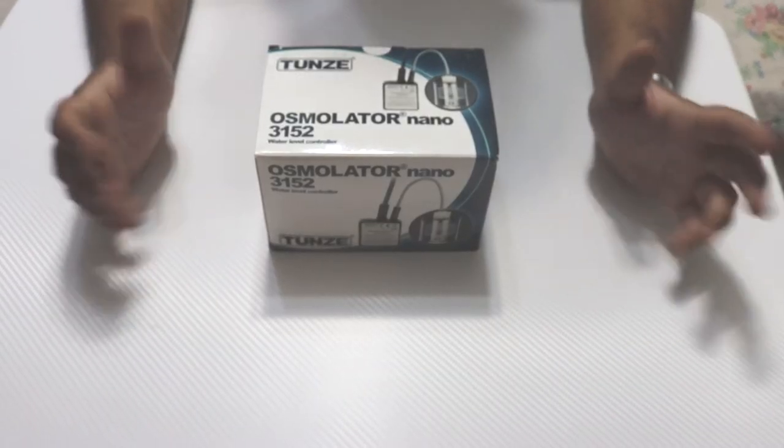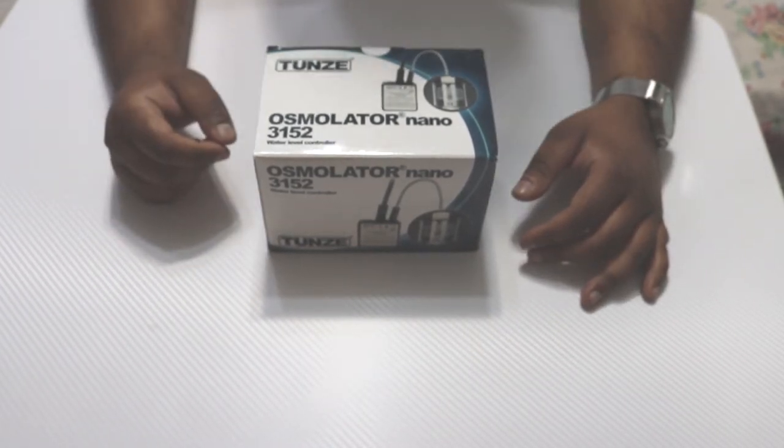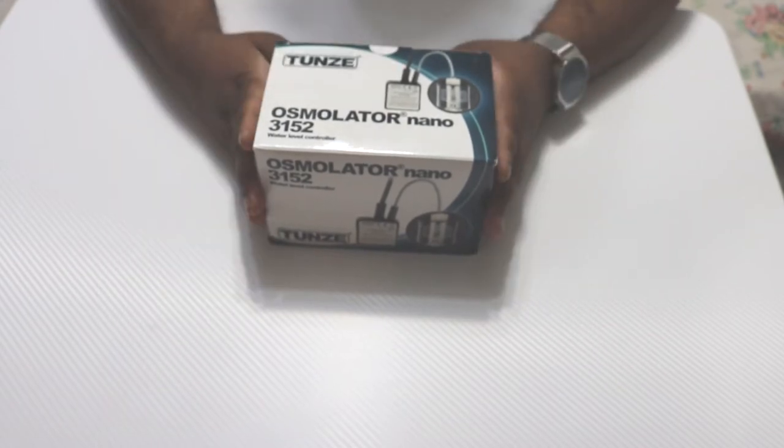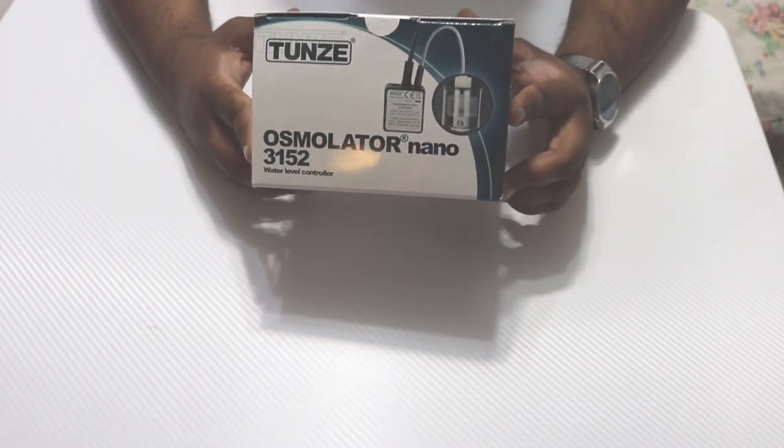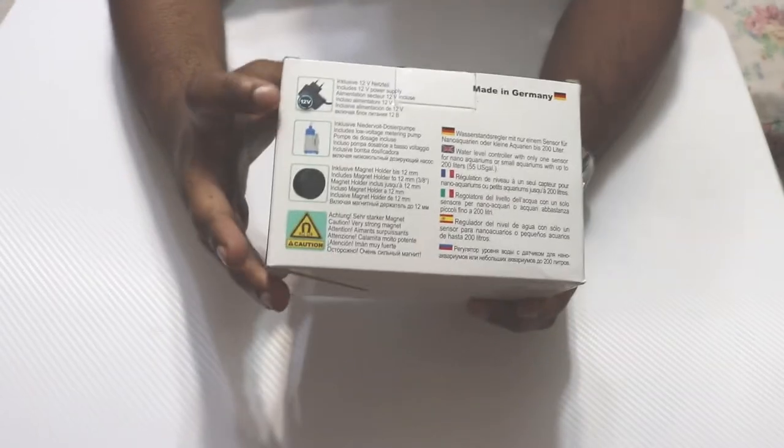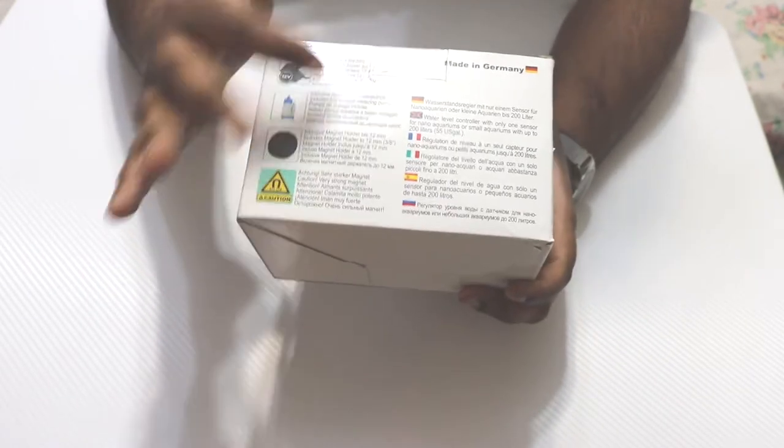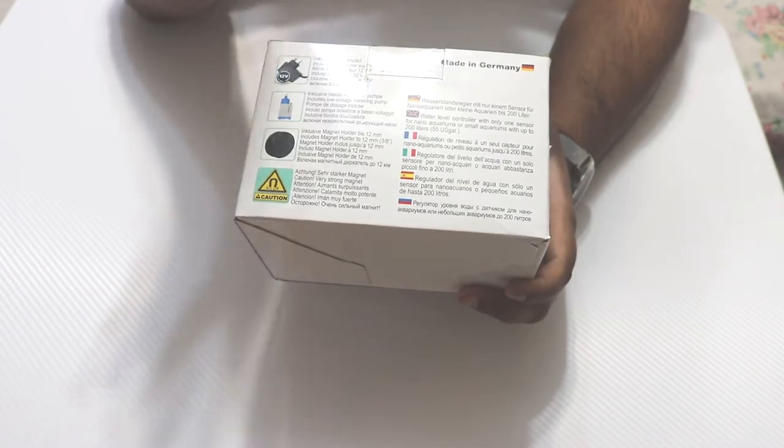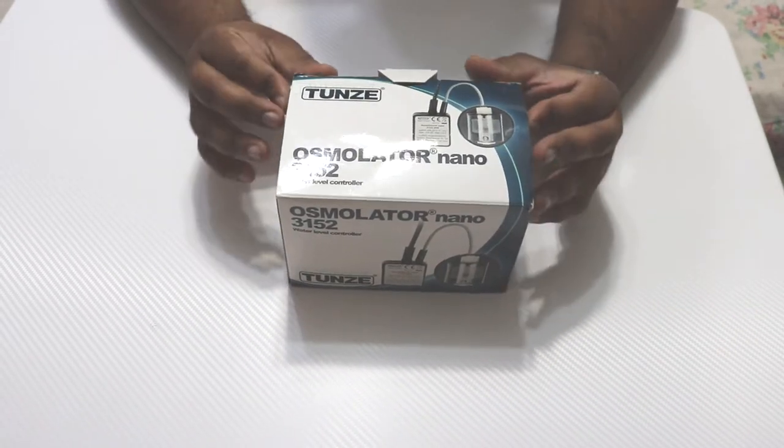So here we are on the bench with the unboxing of the Tunze Osmolator Nano 3152. So let's open it up, see what we get inside. Before we do, I just want to show you guys what's on the box itself. So on the back of the box, it will show you everything that this comes with. As you can see, you got your adapter, your pump. I believe that's the magnet. So it tells you instructions and what it comes with in German and different languages. So pretty simple packaging, not too bad. So let's open her up and see what do we get.